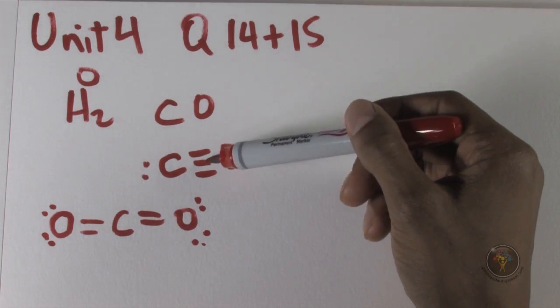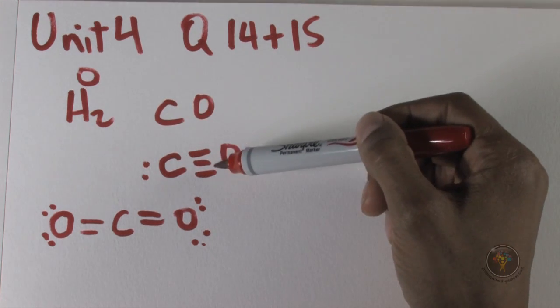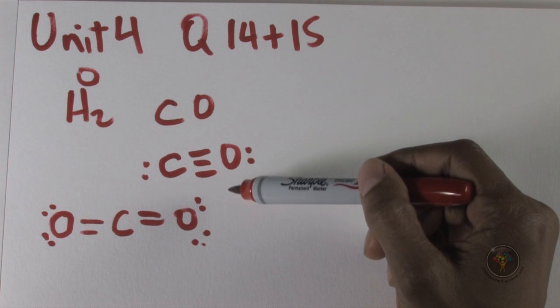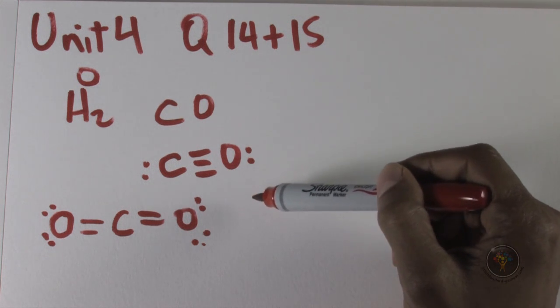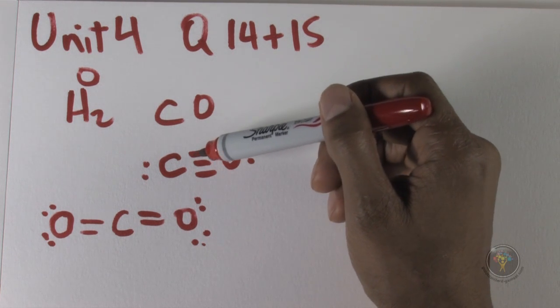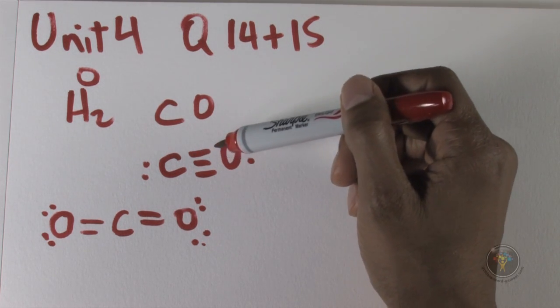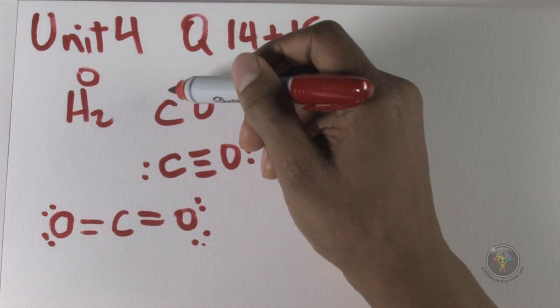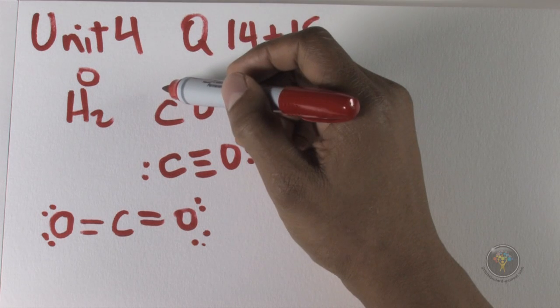So you would think that this would increase the oxidation number of carbon by three because one of their other rules number five is a multiple bond has a multiple effect. However, because this bond is completely provided by oxygen, it must be ignored even with those rules.